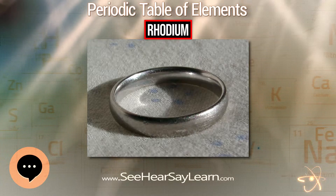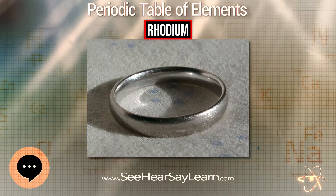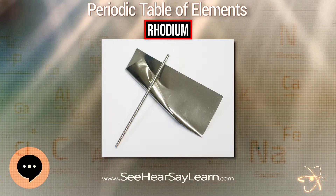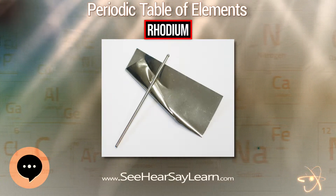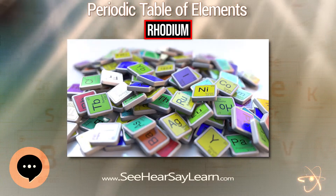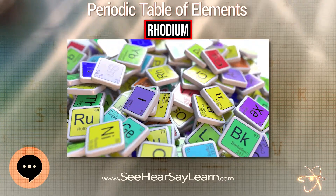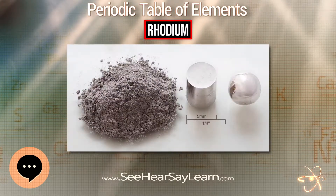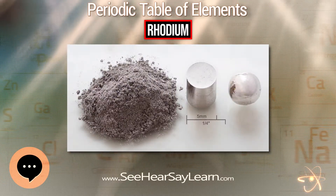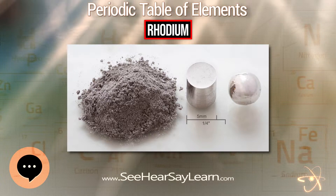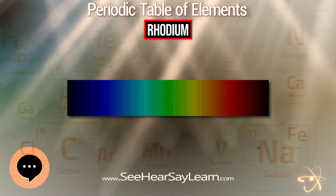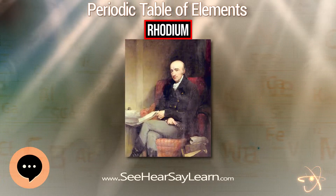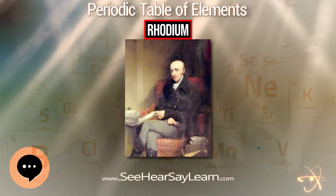Rhodium is one of the rarest elements in the earth's crust, comprising an estimated 0.0002 parts per million. Its rarity affects its price and its use in commercial applications. The industrial extraction of rhodium is complex because the ores are mixed with other metals such as palladium, silver, platinum, and gold, and there are very few rhodium-bearing minerals. It is found in platinum ores and extracted as a white inert metal that is difficult to fuse.